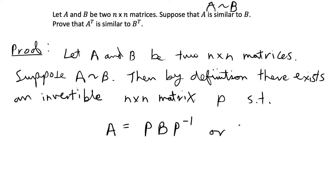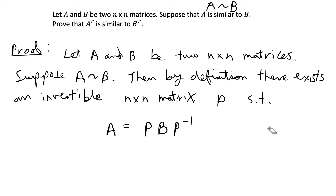This is also sometimes written equivalently as A times P is equal to P times B. For the sake of this problem I'm just going to leave it in the first form. So this is what we are given and we know it is true.